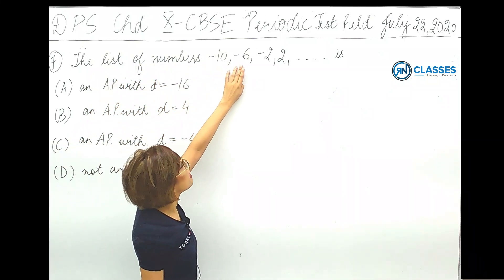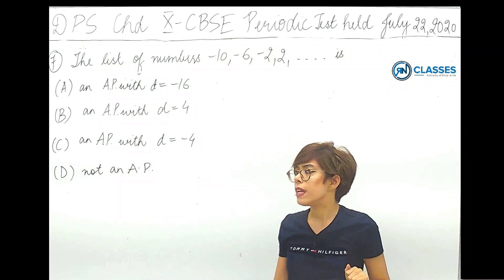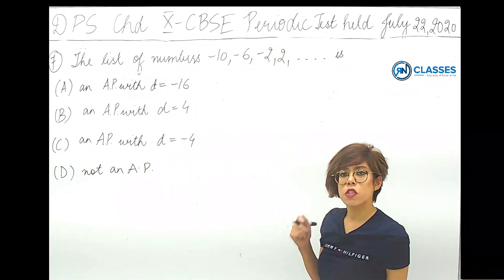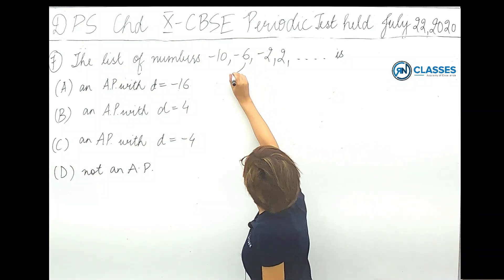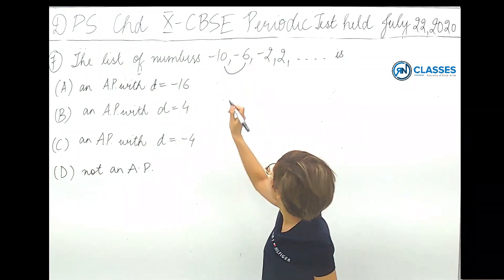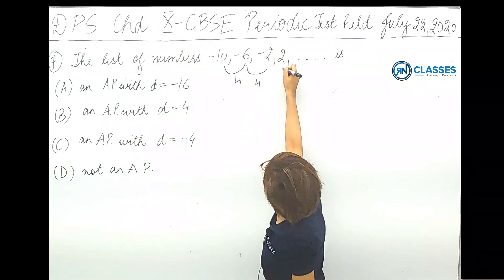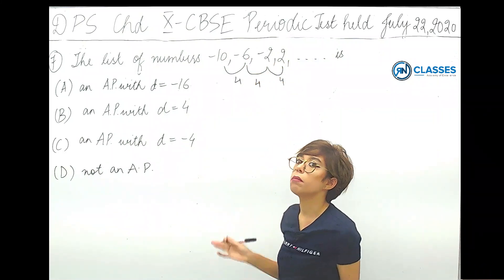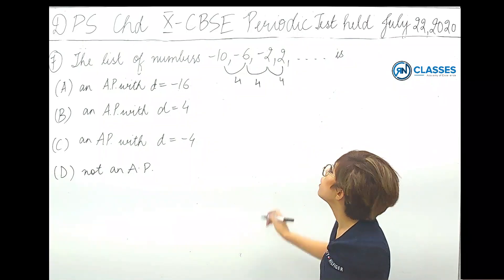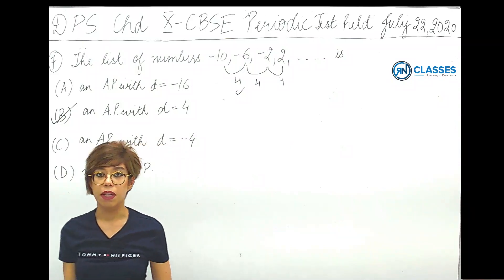The next question: checking the list of numbers minus 10, minus 6, minus 2, 2. The difference between consecutive terms is 4 each time: minus 6 minus minus 10 equals 4, minus 2 minus minus 6 equals 4, 2 minus minus 2 equals 4. So it is definitely an AP with common difference 4. Option B is correct.